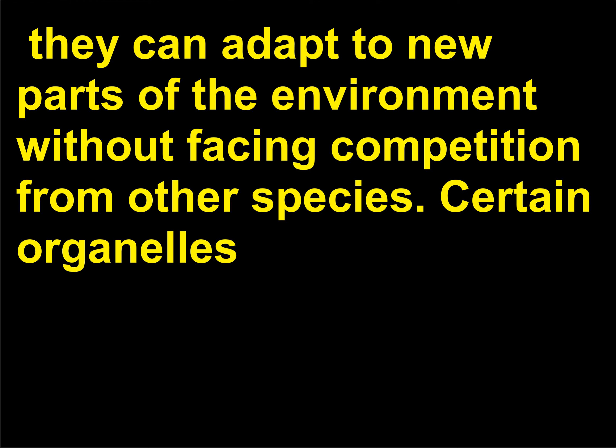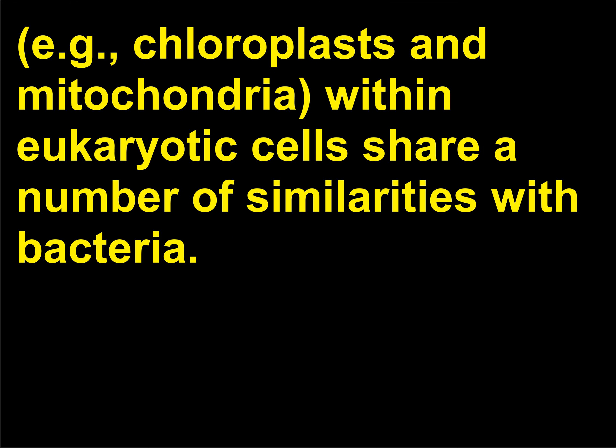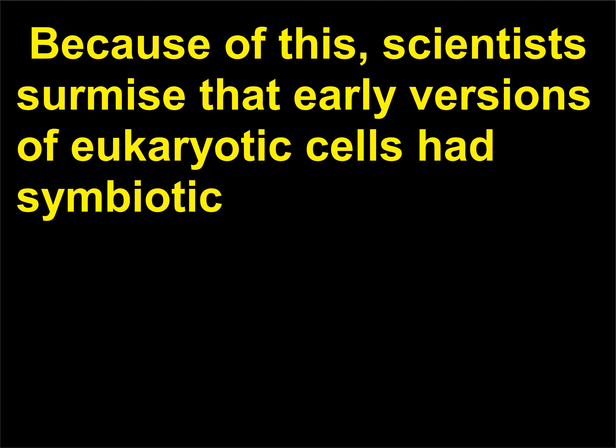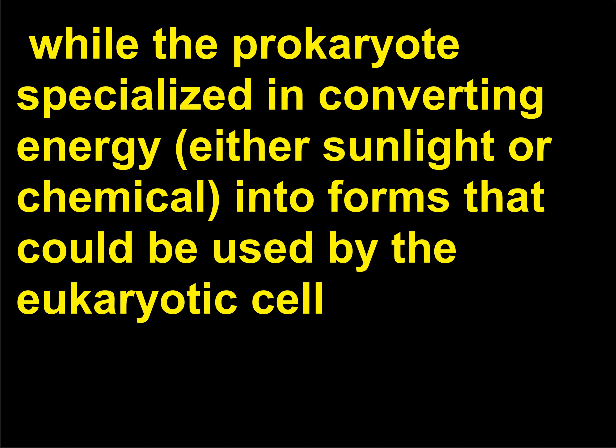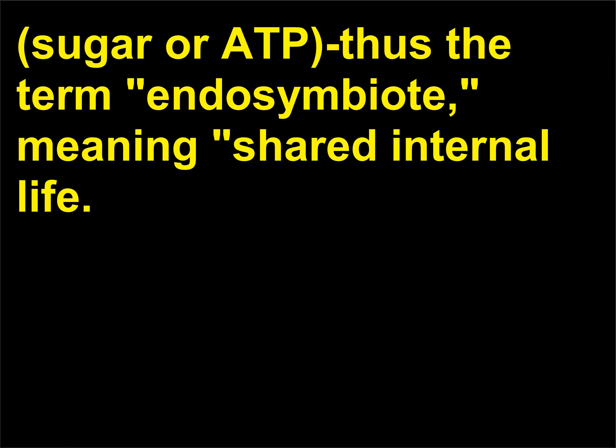Certain organelles — for example, chloroplasts and mitochondria — within eukaryotic cells share a number of similarities with bacteria. Because of this, scientists surmised that early versions of eukaryotic cells had symbiotic relationships with certain bacteria: the eukaryote provided protection and resources, while the prokaryote specialised in converting energy — either sunlight or chemical — into forms that could be used by the eukaryotic cell (sugar or ATP). Thus the term endosymbiote, meaning shared internal life.